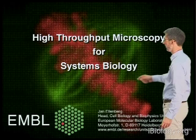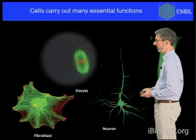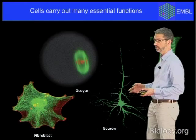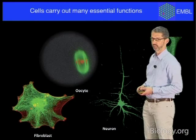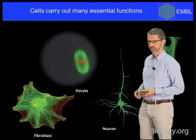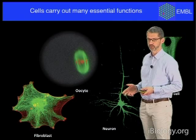The motivation for such studies is that cells carry out many essential functions in life. This is illustrated by this panel of different cell types on this image, and each of them actually has multiple essential functions that it's carrying out. Now if we want to understand molecularly how these functions work, the first task we have is to identify the genes responsible for these functions.